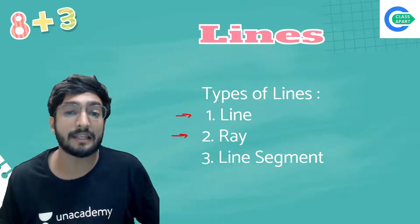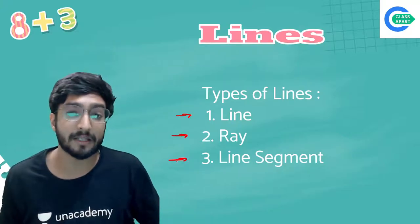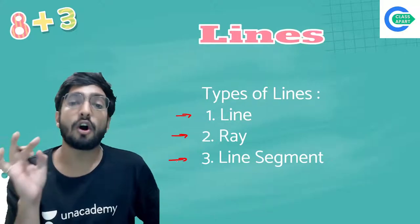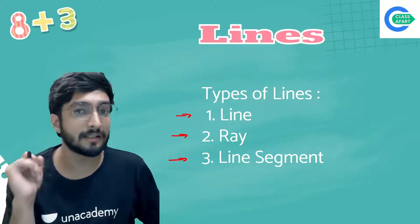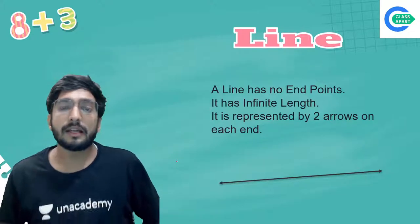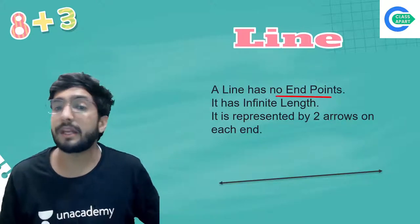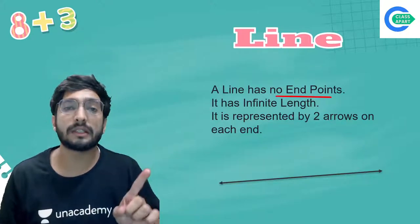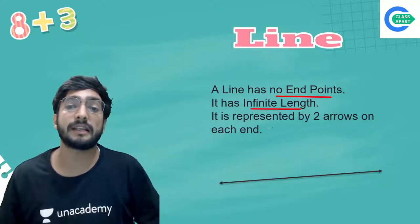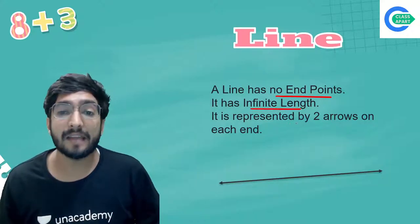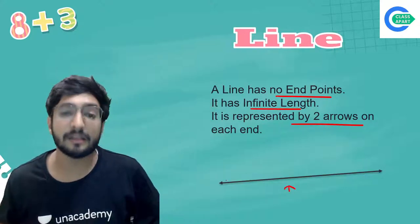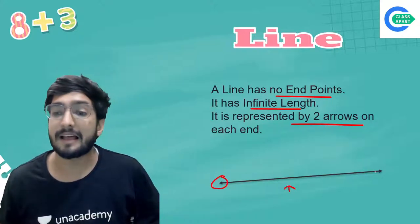Let's start with lines. Under types of lines, we have a line, a ray, and a line segment. These three are differentiated based on their length and starting and end points. A line is something that has no endpoint — it doesn't start anywhere, it doesn't end anywhere — its length is infinite and it is represented by two arrows on each end.